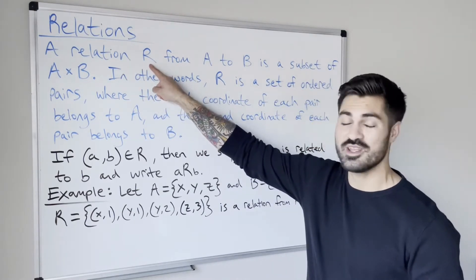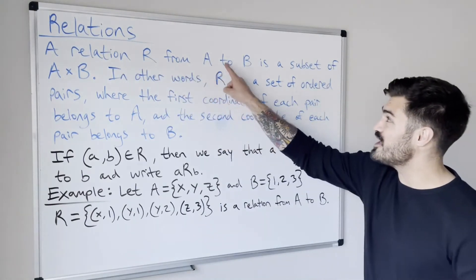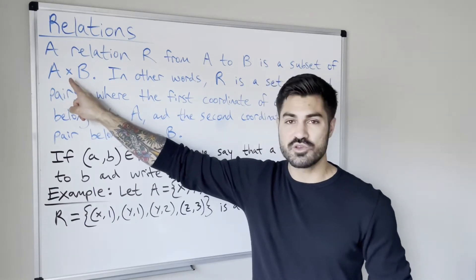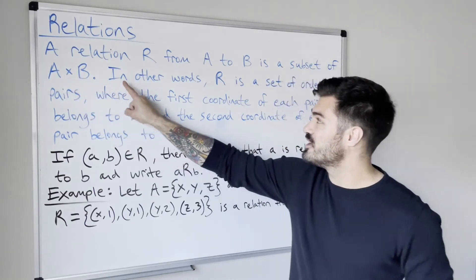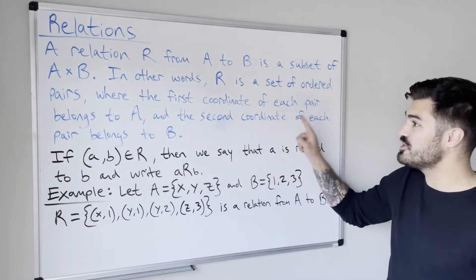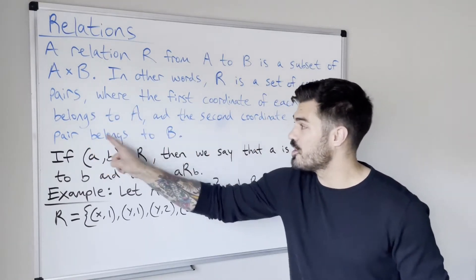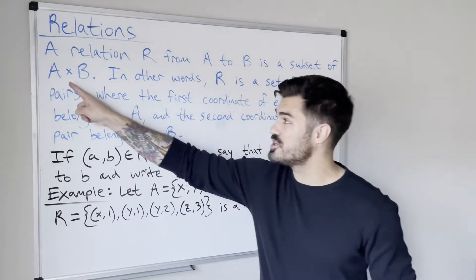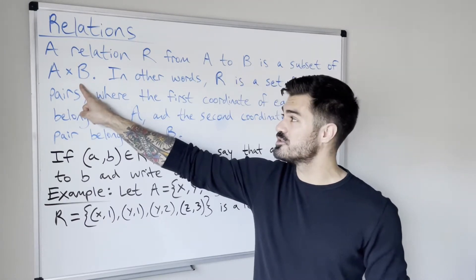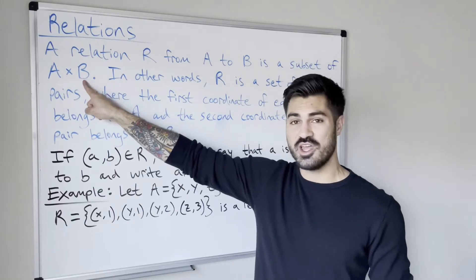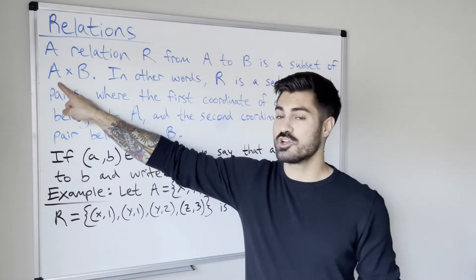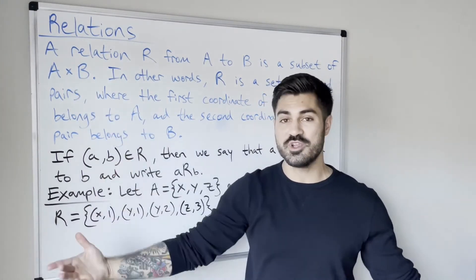A relation — we typically denote it as capital R — from a set A to a set B is a subset of the Cartesian product of A and B. In other words, R is a set of ordered pairs where the first coordinate of each pair belongs to A, and the second coordinate of each pair belongs to B. The Cartesian product of A and B is a set of ordered pairs where we take each element from A and pair it with each element from B, and a relation is a subset of that Cartesian product.